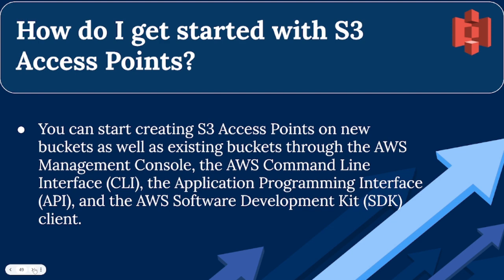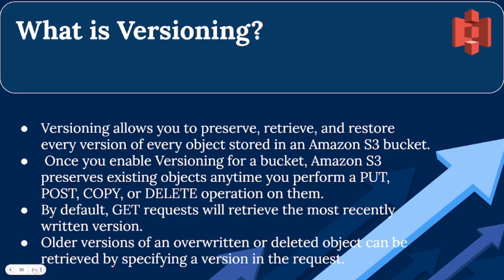Question 17: What is versioning? Versioning allows you to preserve, retrieve, and restore every version of every object stored in an Amazon S3 bucket. Once you enable versioning for a bucket, Amazon S3 preserves existing objects anytime you perform a PUT, POST, copy, or delete operation on them. By default, GET requests will retrieve the most recently written version. Older versions of an overwritten or deleted object can be retrieved by specifying a version in the request.